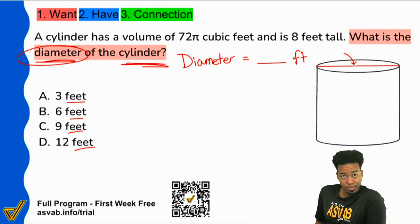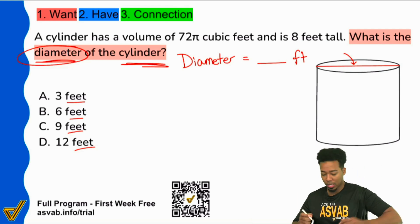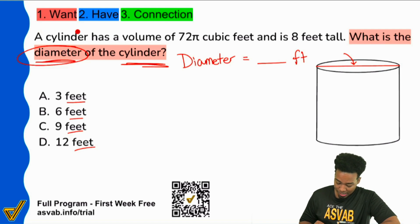Here's what I'm going to do. I'm going to look at the information that I'm given to understand, is there any information about the cylinder that I can use to get this right? Check out that first sentence. It says, a cylinder has a volume of 72π cubic feet and it's eight feet tall.